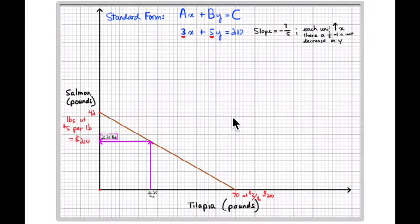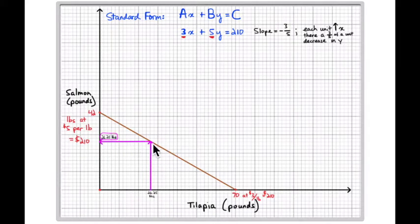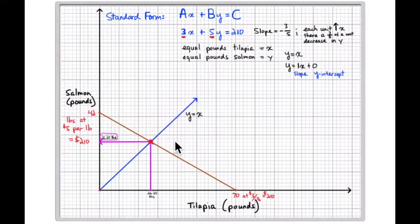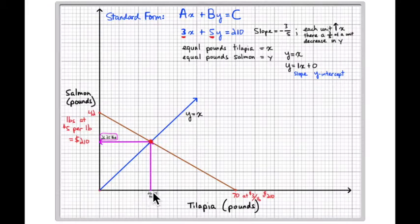First, let's look at the ratio of tilapia to salmon where it's an equal number of pounds — twenty-six and a quarter pounds of tilapia and twenty-six and a quarter pounds of salmon. There is another equation you can use to help solve this problem: y equals x, meaning the pounds of tilapia equals the number of pounds of salmon. That's an equation with a slope of one and a y-intercept of zero.